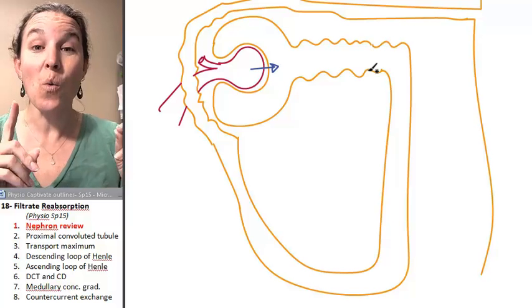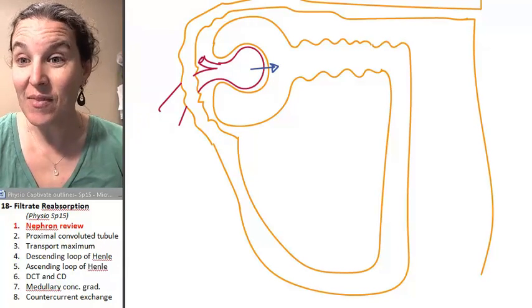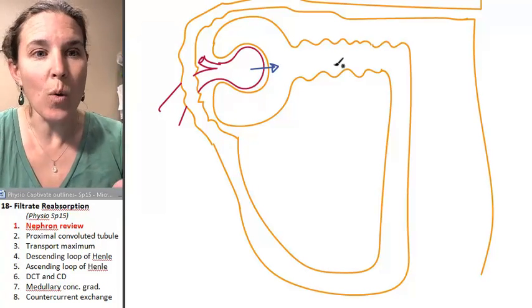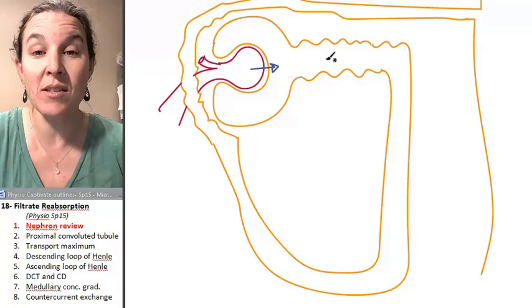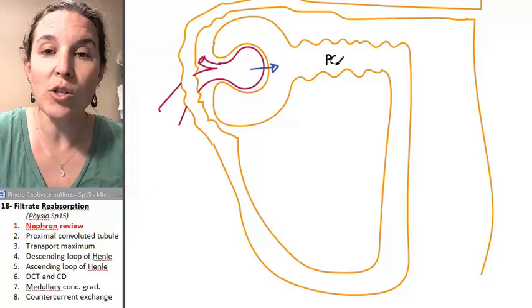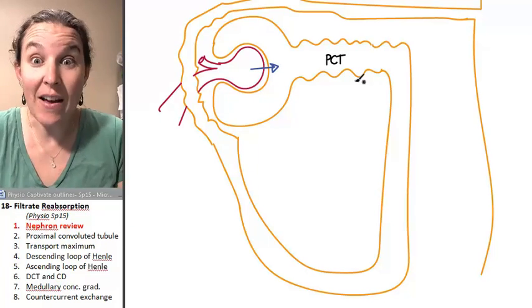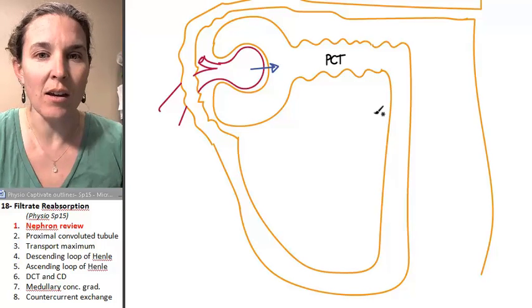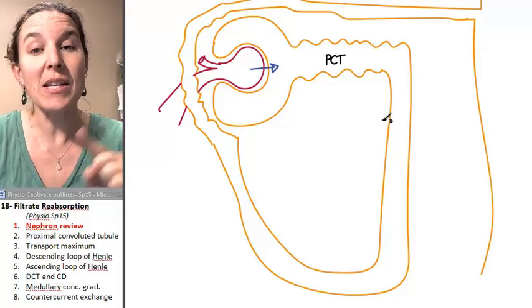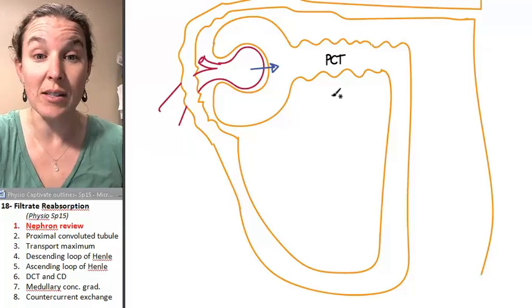So we're going to look at each place in our nephron and talk about what is reabsorbed. What are the strategies that are used to reabsorb stuff back into the blood supply? The proximal convoluted tubule is where we're going to start, and 70% of everything that's filtered out is reabsorbed by the proximal convoluted tubule. This is important and we're going to look at some mechanisms for how this is done.